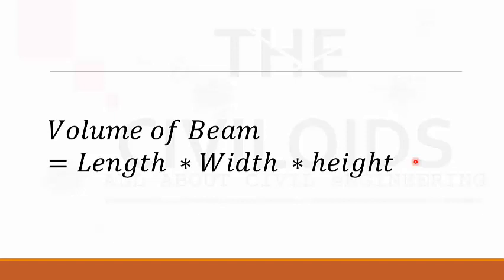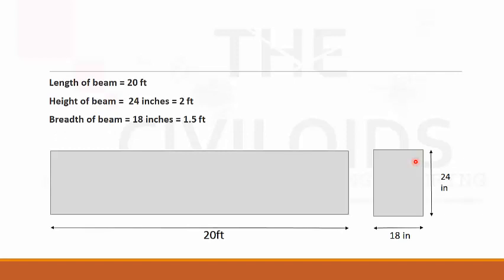Now we will take a practical example. Here we have: length of beam is 20 feet, height or thickness is 24 inches which is 2 feet, and breadth of the beam is 18 inches which equals 1.5 feet.